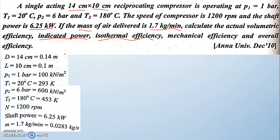The given data includes: bore diameter D, stroke length L, P1, T1, P2, T2, shaft power, and mass flow rate. The mass has been converted to kg/s by dividing by 60. First, we calculate volumetric efficiency. We have two equations: actual volume divided by swept volume, or 1 + C − C(P2/P1)^(1/n). Since the clearance ratio C is not given, we use the first form: VA/VS. VS is calculated as (π/4)D²L.